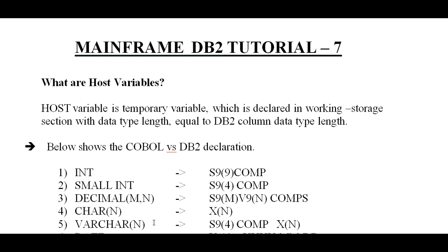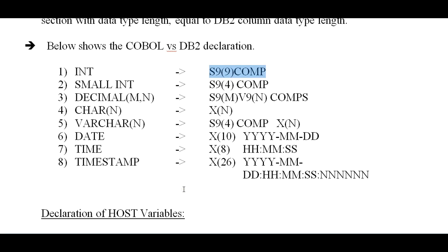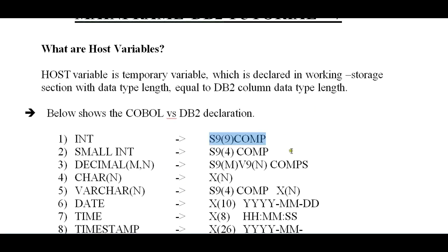Now you may have practiced different SQL commands like DDL, DML, and DCL commands, and when creating a table you would have declared those data types. So let us see how COBOL and DB2 declarations differ. If it is an INT in DB2, in COBOL it will be S9 COMP. Similarly, SMALLINT is S9 COMP, DECIMAL is S9 COMP, CHAR is X, VARCHAR is also converted, DATE is X, TIME is X, TIMESTAMP is X, and so on. INT is converted to S9 of 4, and the others follow in the same way.